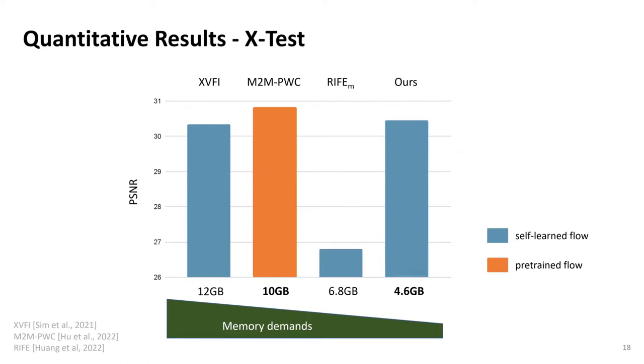In the following, we show some quantitative comparisons on two of the datasets. First, for X-Test, the test set which has been introduced alongside the method XVFI and contains a lot of large motion. We achieve state-of-the-art accuracy on X-Test among models without pre-trained flow. Our approach also has the lowest memory requirements and the lowest number of trainable parameters among all approaches.